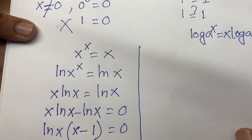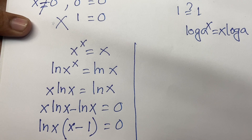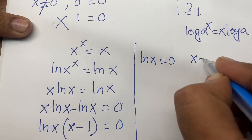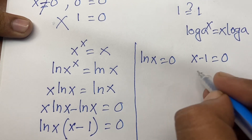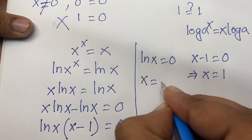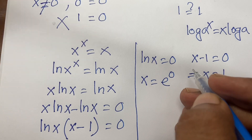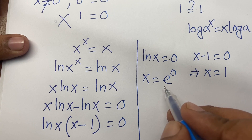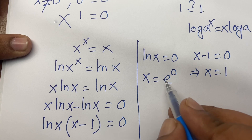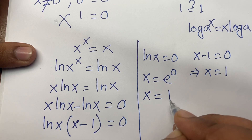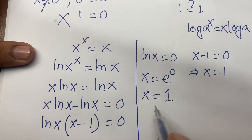So I can say ln x times x minus 1 equal to 0. Now there are two cases: ln x equal to 0, or x minus 1 equal to 0. This gives x equal to 1 from the second case, and from the first case x equal to e to the power 0. Because log functions are the inverse of exponential functions, ln x equal to 0 means e to the power 0 equals x, so x equal to 1. Therefore x equal to 1.